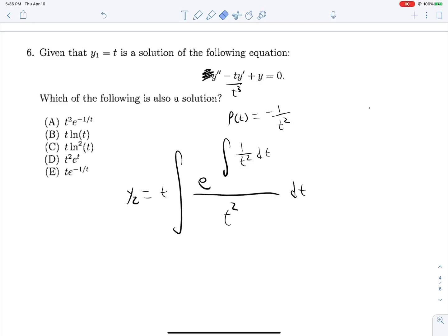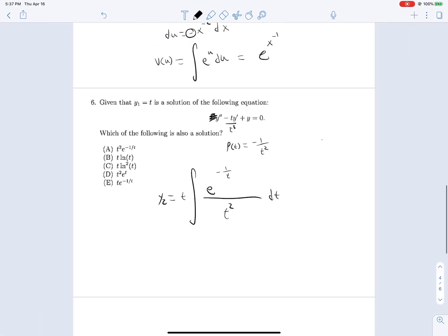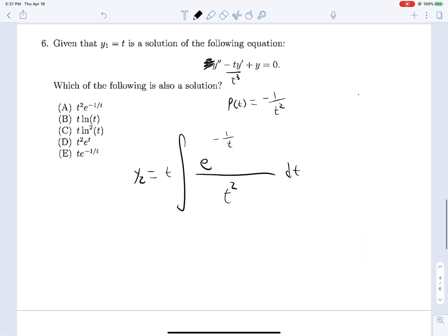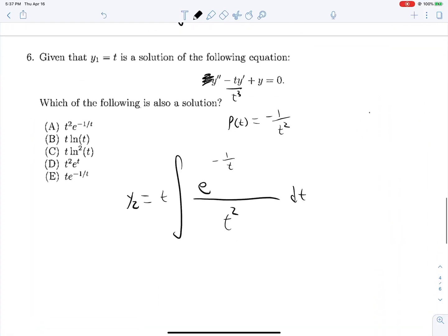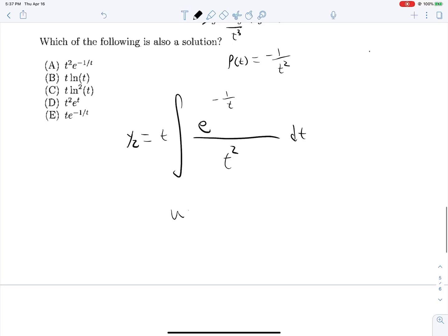This integral is negative 1 over t, like so. And we can do, wait, is this exactly, almost exactly the same thing? No, this is exactly the same thing. Yeah, it's exactly the same thing. Okay, u is equal to negative 1 over t, du is equal to 1 over t squared.